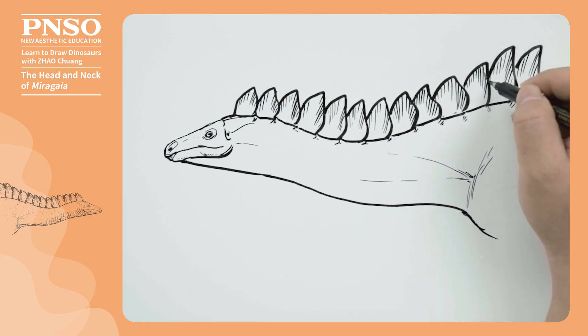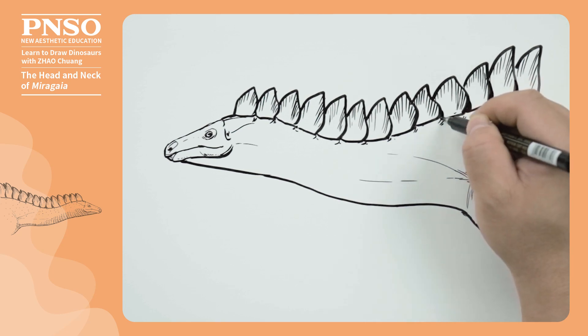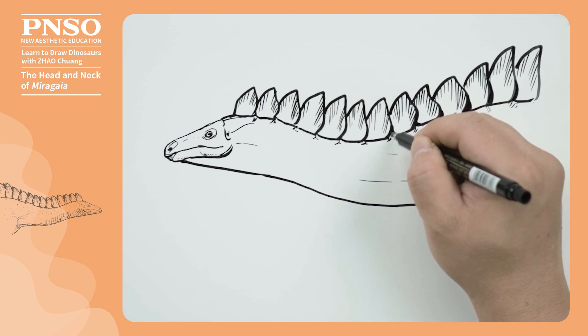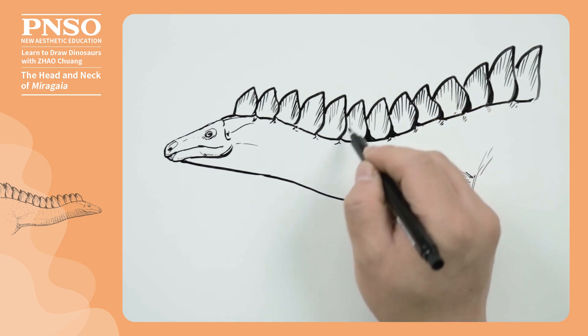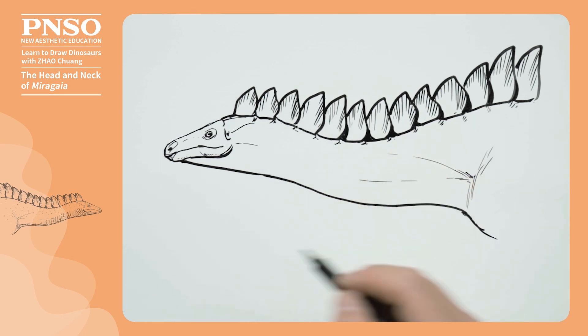The bony plates were one on top of the other. We draw the shadows caused by the overlapping relationship. But, the shadows should not be drawn too big. Just a little will do. On the front bony plates, we don't need to draw.